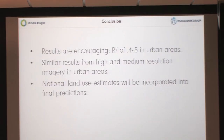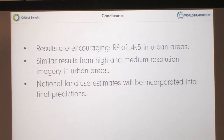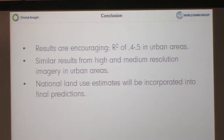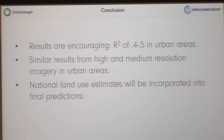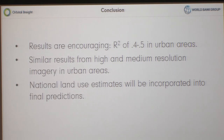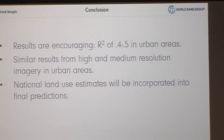In conclusion, the results are definitely encouraging, particularly in urban areas — 0.4 to 0.5 R-squared range, a little bit higher for high-resolution images but similar order of magnitude. Unfortunately, the rural results are not quite where we'd want them to be yet. We see similar results for medium and high-resolution images in urban areas. The national land use estimates are still being incorporated into the final predictions, but we expect those to have a positive impact on the R-squared values. Thank you.